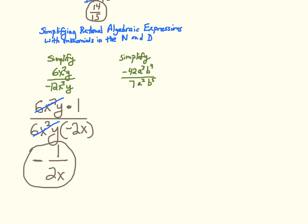In the next one, I have negative 42a cubed b to the fourth over 7a squared b to the fifth. We can inspect this and realize that the greatest common factor is 7a squared b to the fourth. The remaining factors in the numerator are negative 6a.